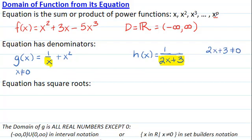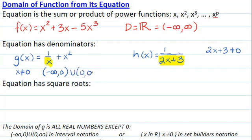The domain of g is all real numbers except for 0. We can write that in interval notation as negative infinity comma 0 union 0 to positive infinity, or in set-builder notation as x is a real number such that x is not equal to 0.